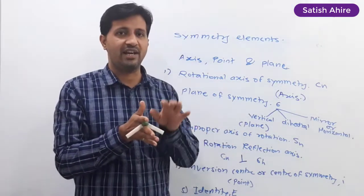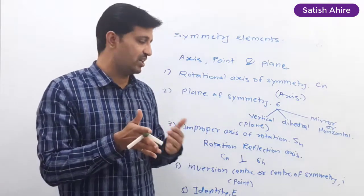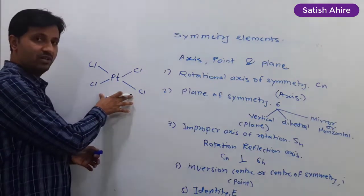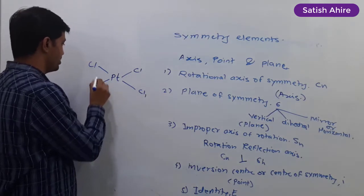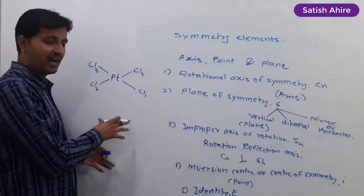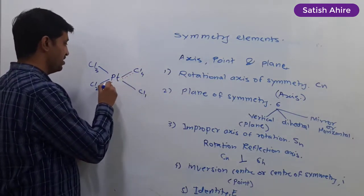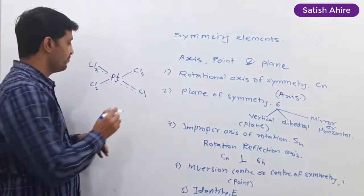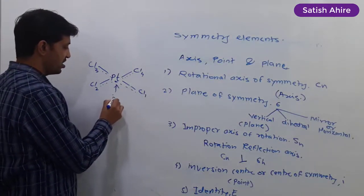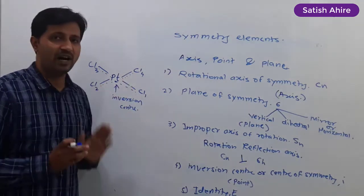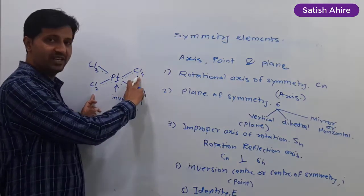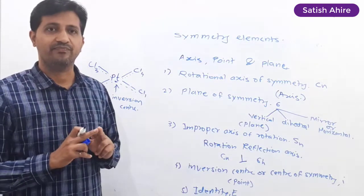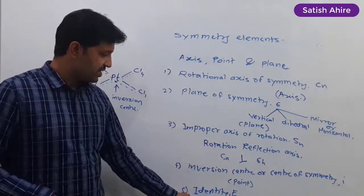The next point is the improper axis of rotation. In the case of the water molecule, there is an absence of this element, so I will explain this in the next lecture. For the inversion center, consider the example of the PtCl4 molecule. I label all the chlorine atoms and pass an imaginary line between two similar atoms. The point at the center is the inversion center. Always remember, this line can only be passed through similar atoms — if different atoms like hydrogen and chlorine are present, there will be no inversion center.